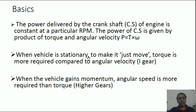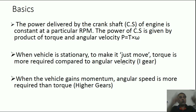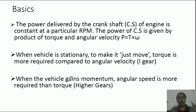When the vehicle is stationary and we want to make it just move, high torque is required compared to angular velocity — we want the vehicle to come into motion and gain some momentum. So a high amount of rotational effort is required to spin the wheels. High torque is required compared to angular velocity, but when the vehicle gains momentum, angular velocity is more required compared to torque.